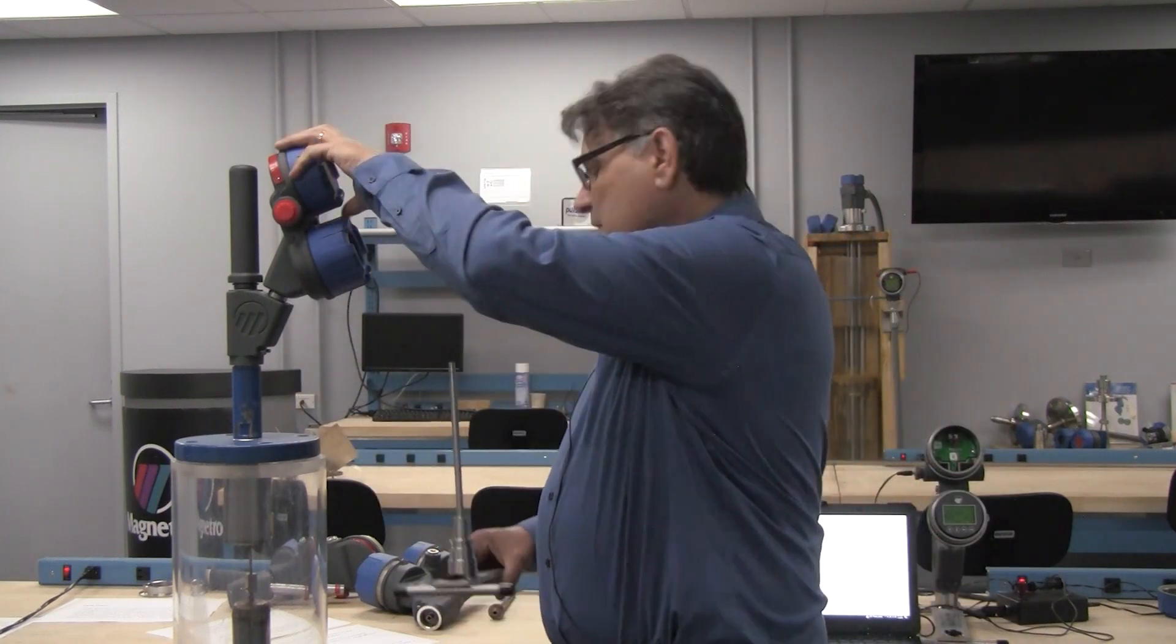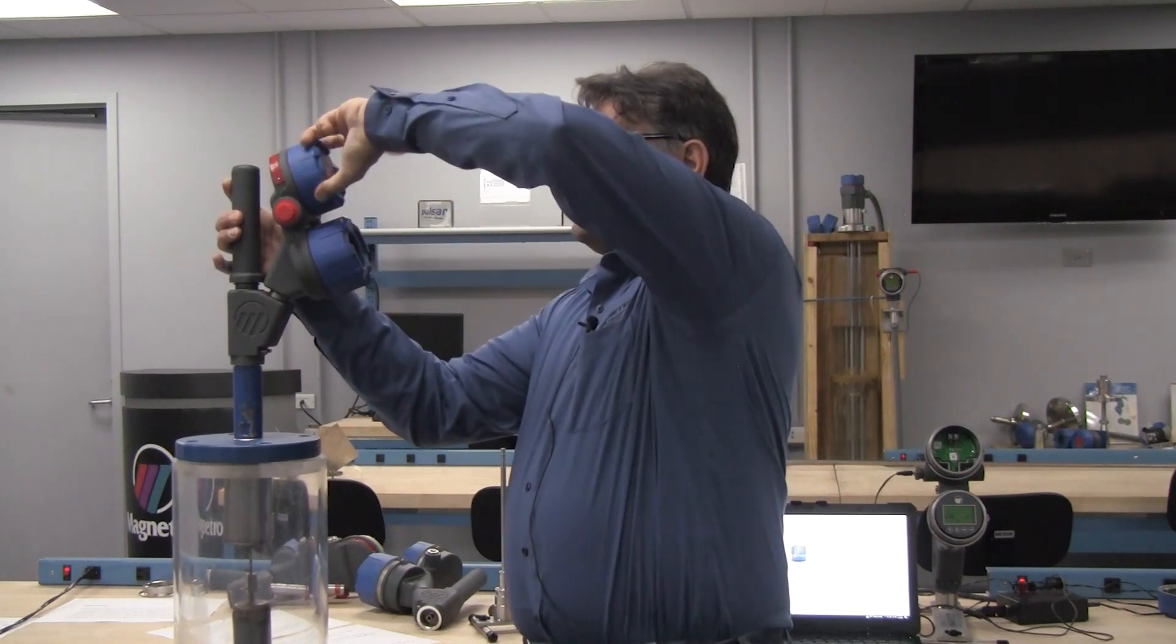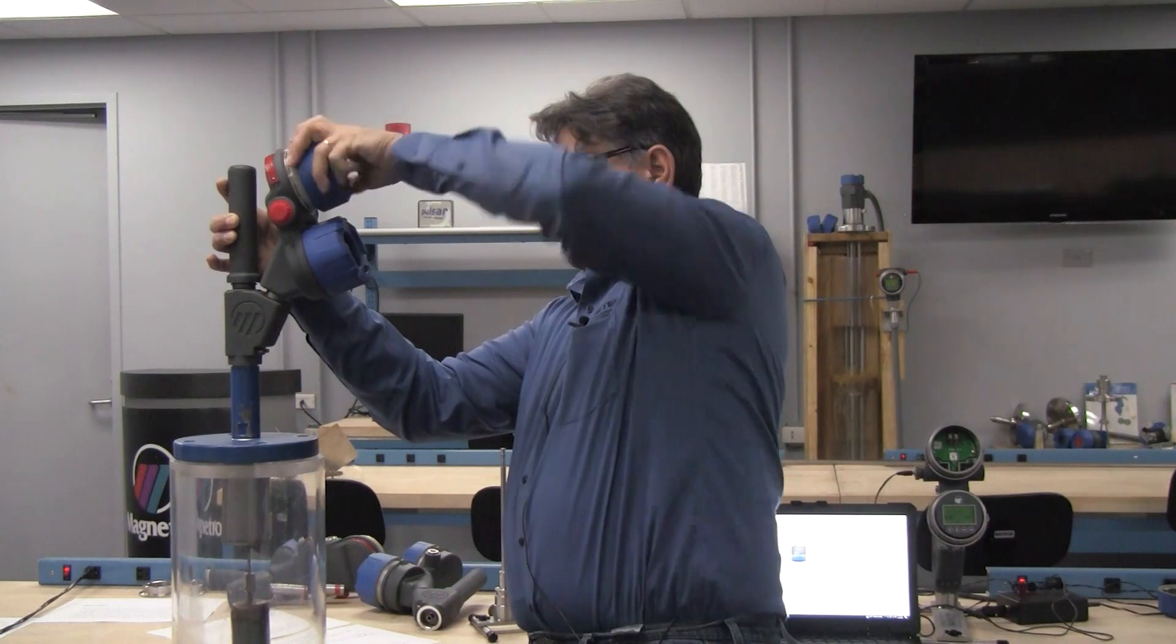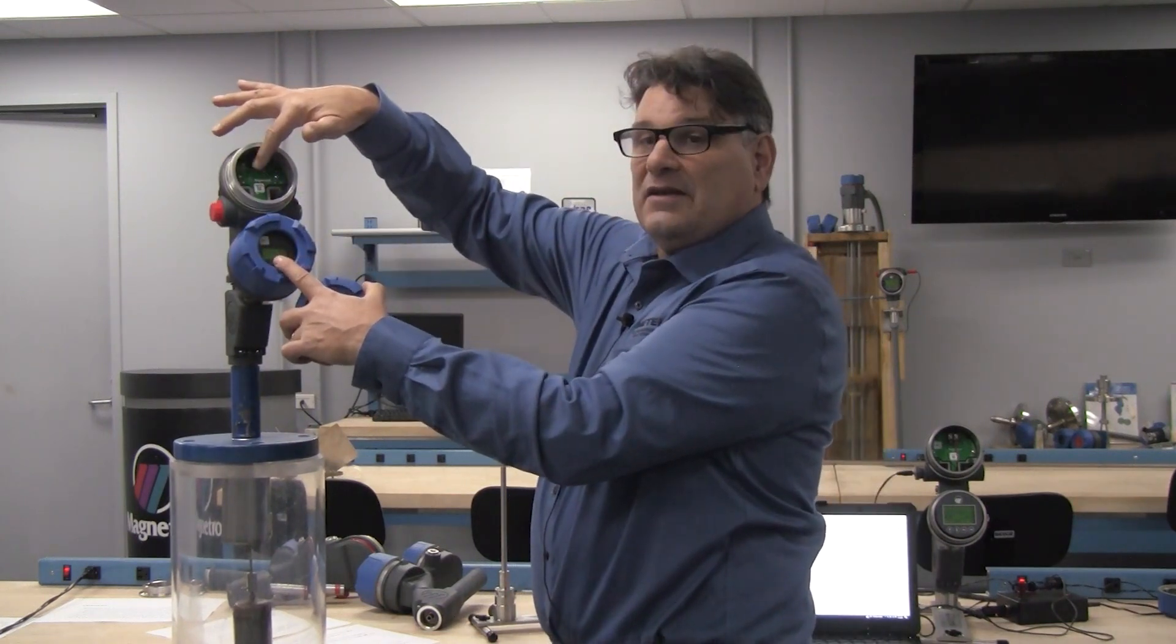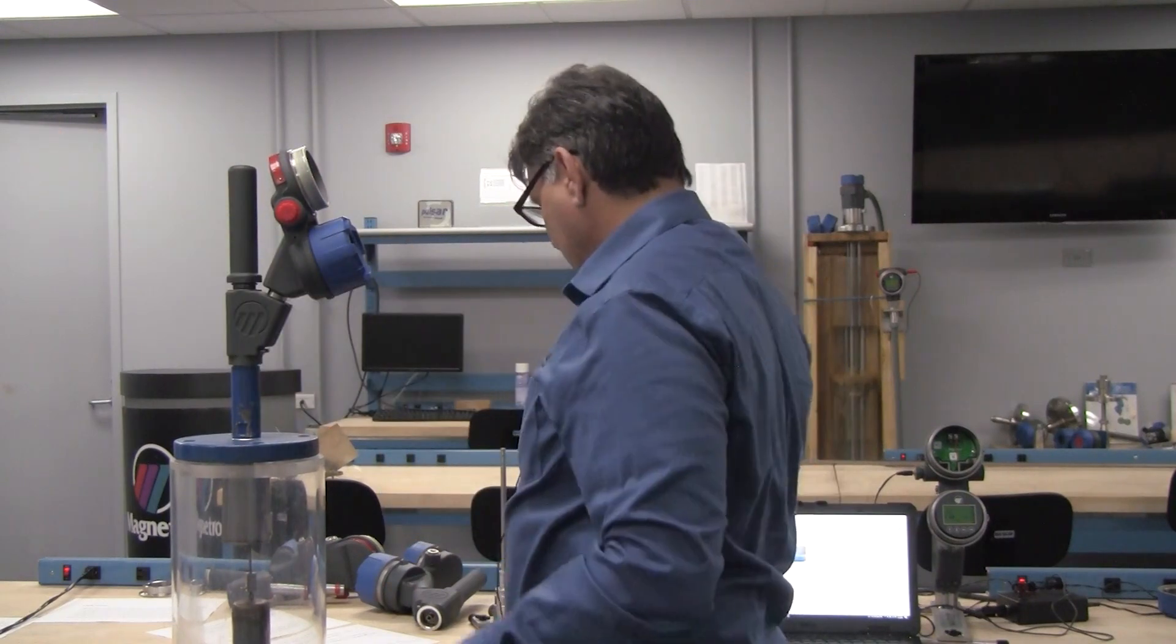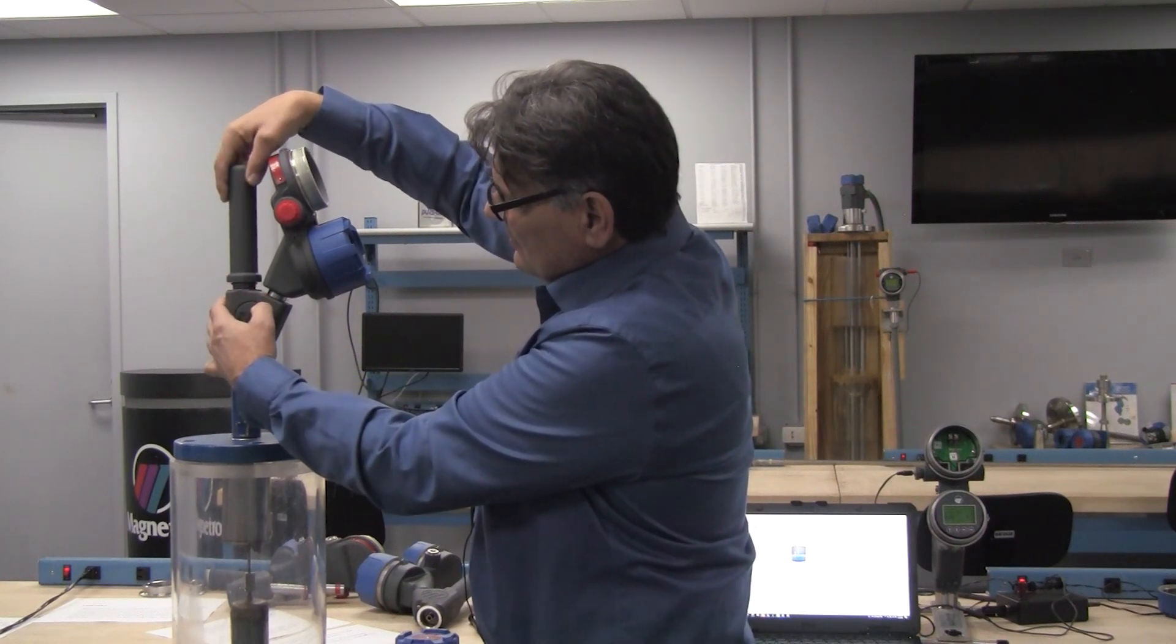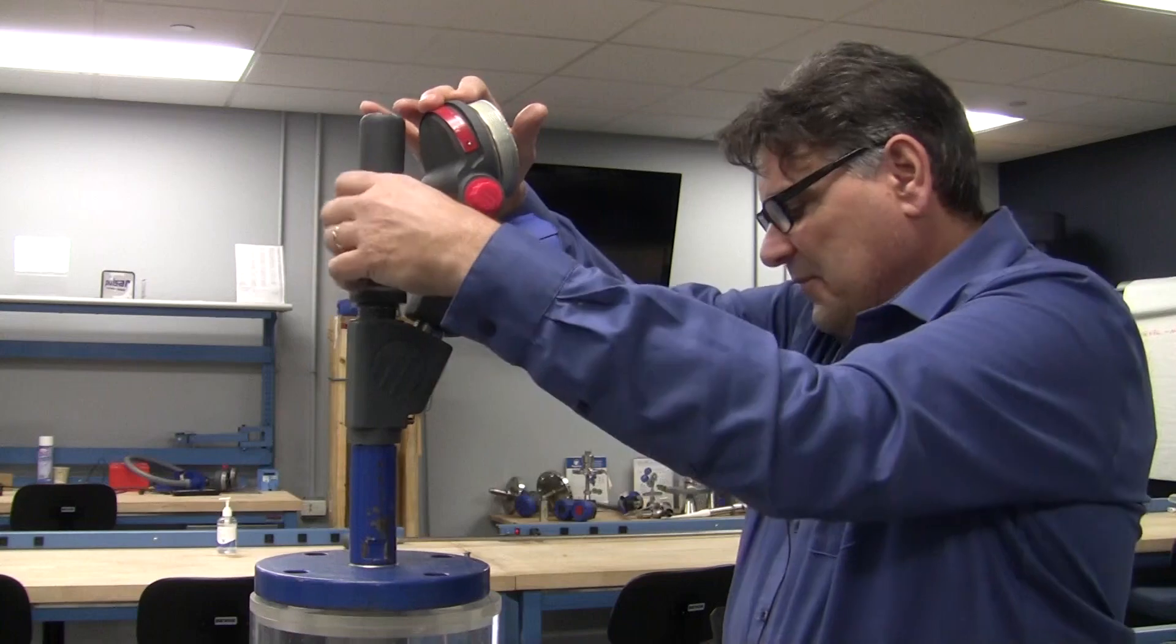We're going to start by removing the old housing. You can start by powering down your old transmitter, remove the cover, top cover, and disconnect your wiring leads. After you have your wiring leads disconnected and pulled out of the transmitter, you're then going to remove the cover from the LVDT.